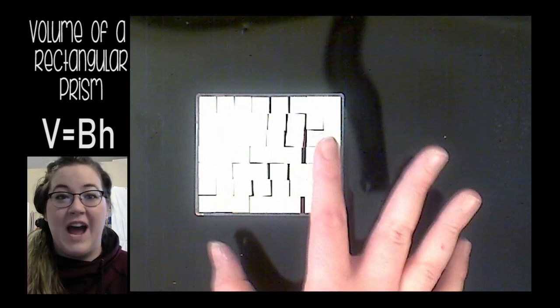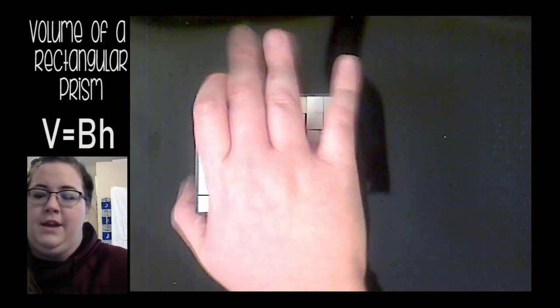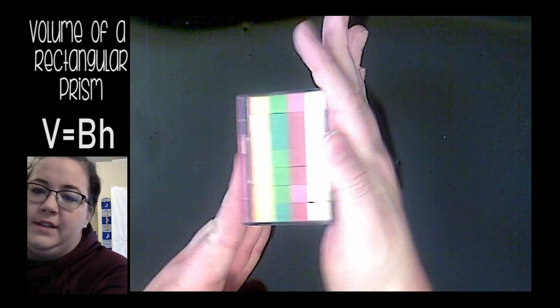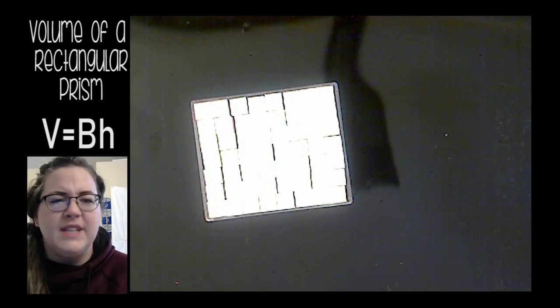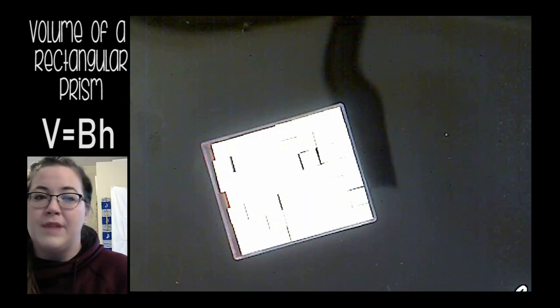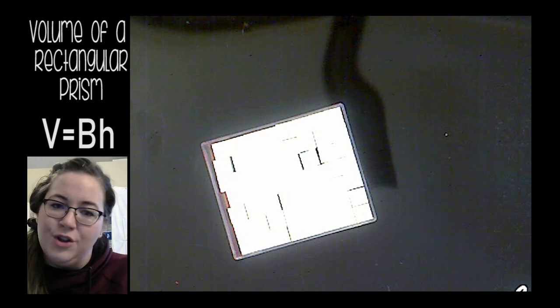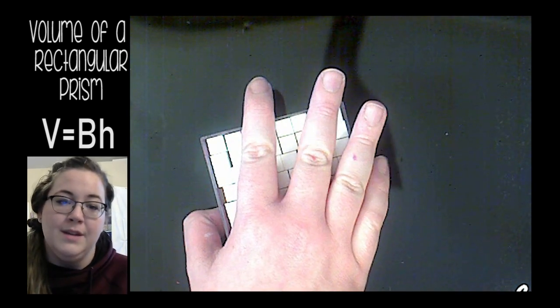Okay, so I added another layer and now I have four layers of 56. So the height of my rectangular prism is 4. Four layers of 56, 56 times 4. That's 224 cubes to fill this container up. That means the volume of my rectangular prism is 224 cubic centimeters.